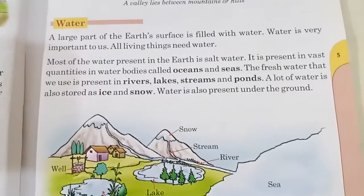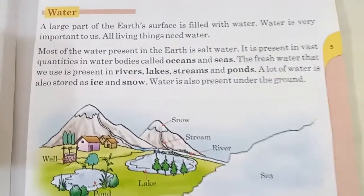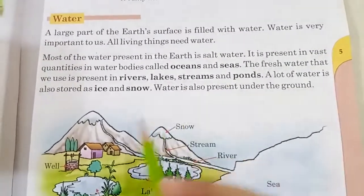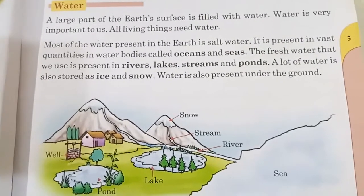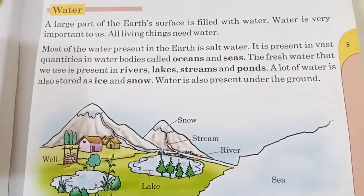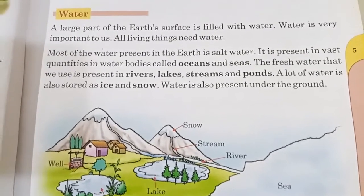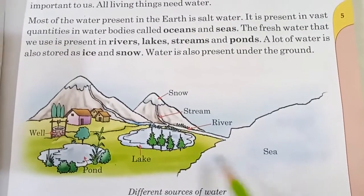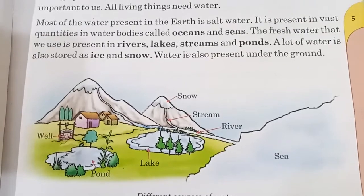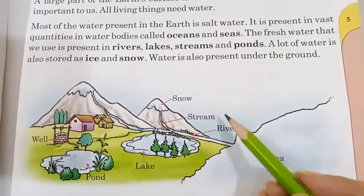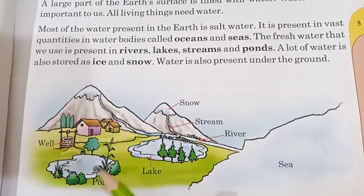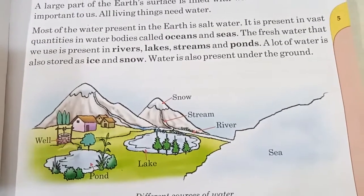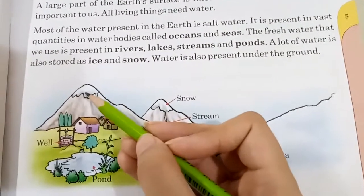Now come to our last topic: water. A large part of the earth's surface is filled with water. Water is very important to us — all living things need water. Most of the water present on earth is salt water, found in vast quantities in oceans and seas. The fresh water that we use is present in rivers, lakes, streams and ponds. A lot of water is also stored as ice and snow, and water is also present under the ground.